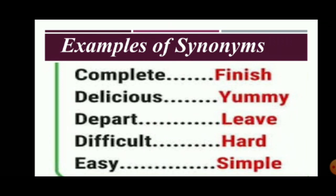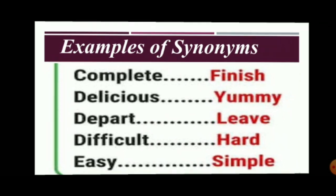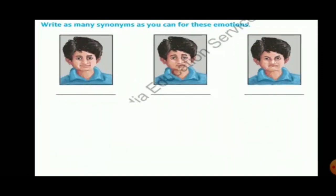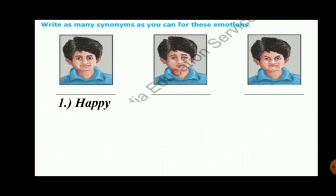Easy and simple are synonyms — words that have the same meaning are called synonyms. The first exercise says: write as many synonyms as you can for these emotions. There are three pictures, all different. For the first picture, the boy is happy, so we have to write the synonyms of happy.